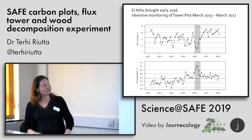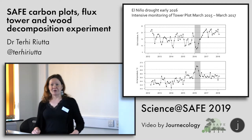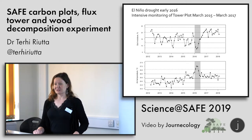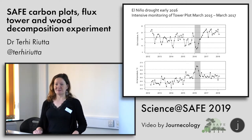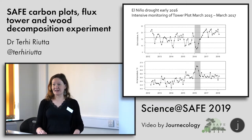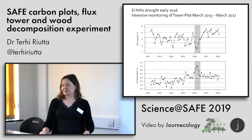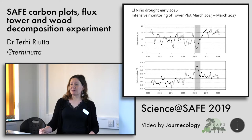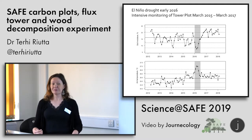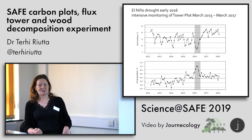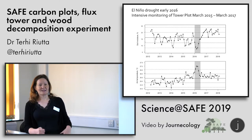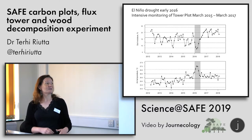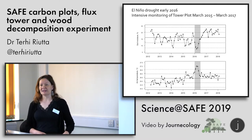That drought happened to coincide with our intensive measurements in the tower plot, where we were already running a girdling experiment. So we updated our measurement frequency of all the carbon cycling components — instead of measuring once a month or every six weeks, we were there several times a month. This was quite fortuitous because we could then quantify the response to El Niño quite well.